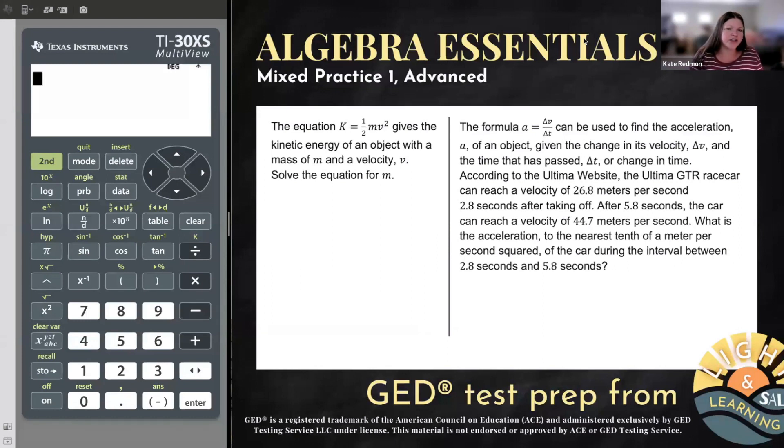So first one says, the equation K equals one half MV squared gives the kinetic energy of an object with a mass of M and a velocity V. Solve the equation for M. So first thing I'm going to do is just copy this guy down. But since it said to solve the equation for M, I'm just going to use a different color for M so you can see something. Now, this is an interesting example because they've told us to solve for M, but they don't give us the two pieces of information we would want if we were going to solve for M. We would want to know, well, what's K and what's V?